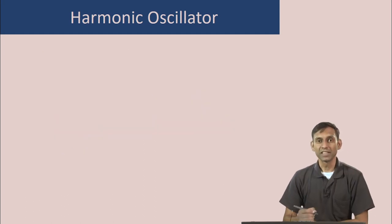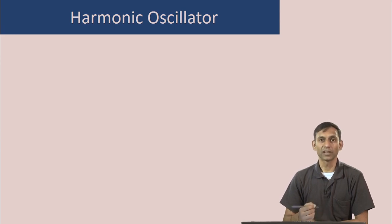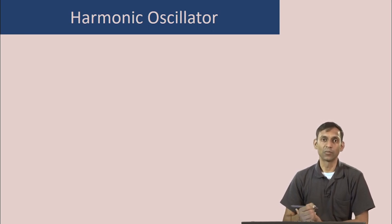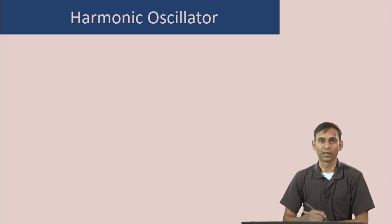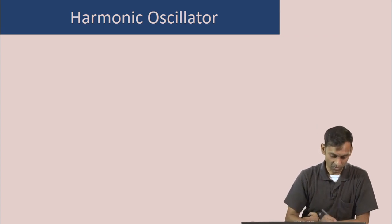We have seen the derivation of the eigenfunctions of the harmonic oscillator and how the harmonic oscillator is a good model for a vibrating diatomic molecule and how it can be extended to the vibration of a polyatomic molecule. Let us now derive the vibrational selection rule.